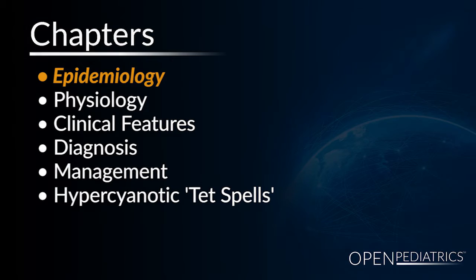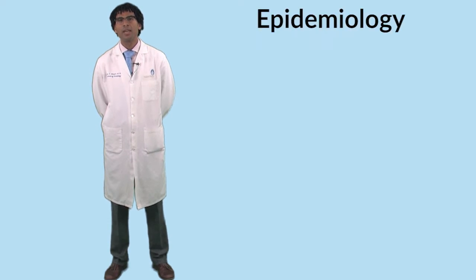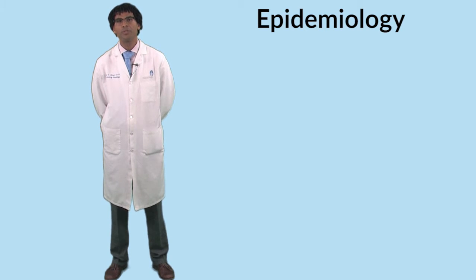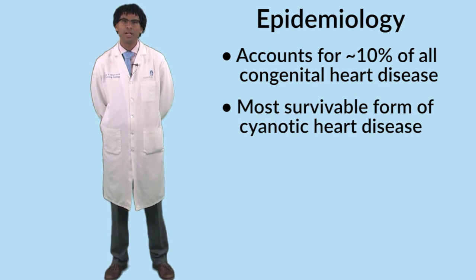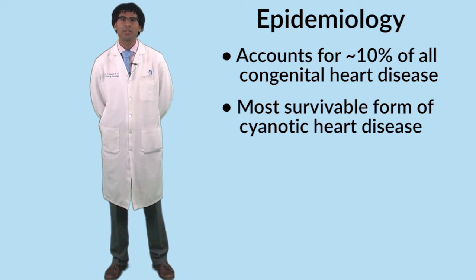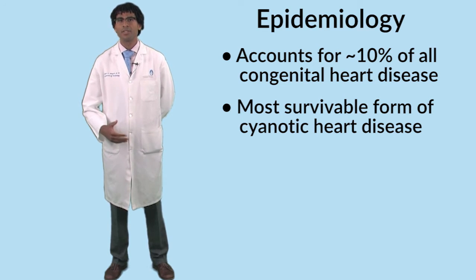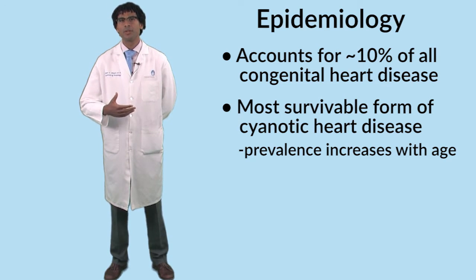Epidemiology. Let's start out with the epidemiology. This is an important form of cardiac cyanosis to understand because it's very common — approximately 10% of all congenital heart disease. And then just as important, particularly in the developing world, is that it's the most survivable form of cyanotic heart disease. So as a form of cyanotic heart disease, its prevalence increases with age.